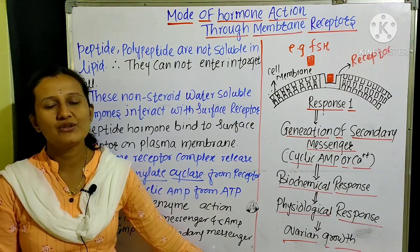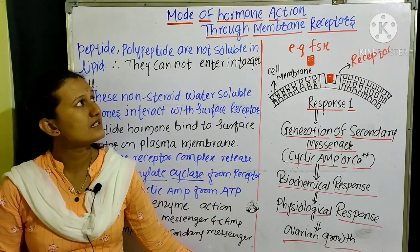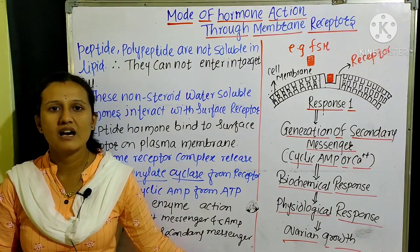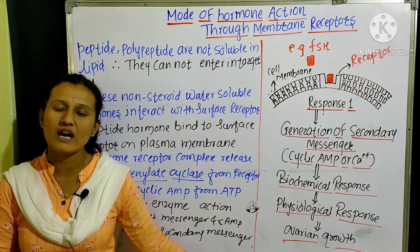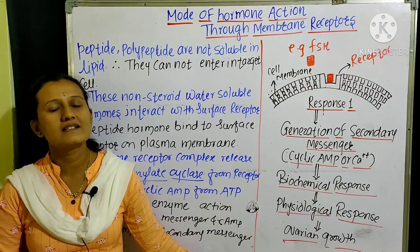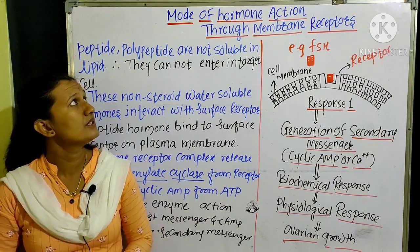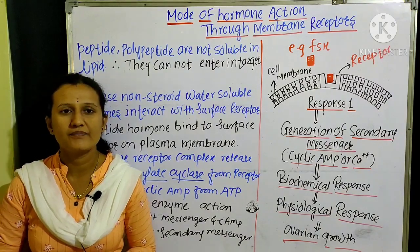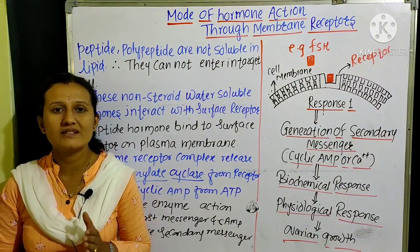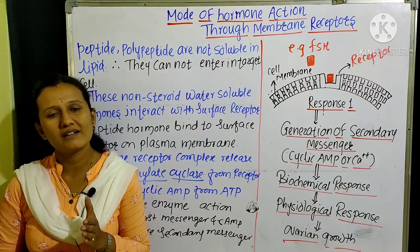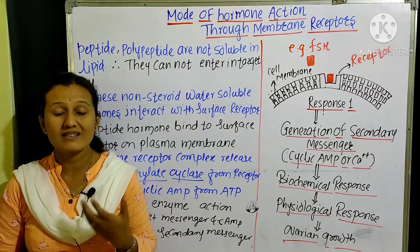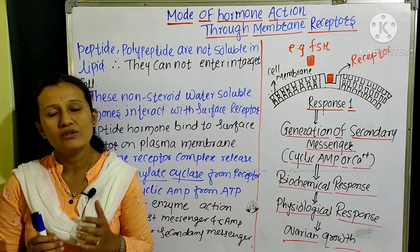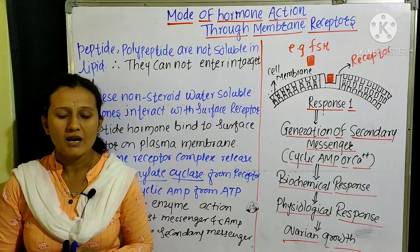Hello students, welcome to today's session. In the last session we have seen about the endocrine system, what are the hormones, what are the properties of hormones and what are their target cells. Today we are going to learn about the mode of hormone action through the membrane receptor, how hormones interact with the cell, how hormones interact with the cytoplasm, and how hormones interact with the nuclear receptor.